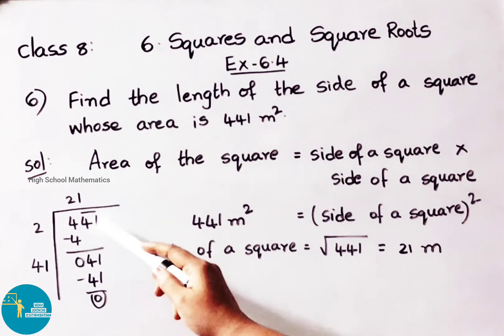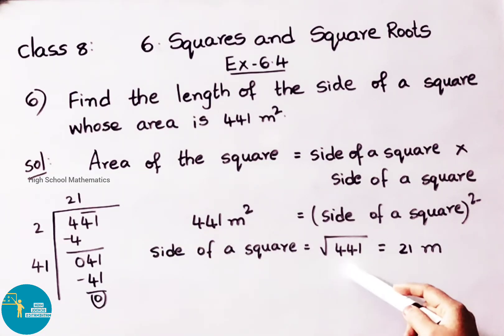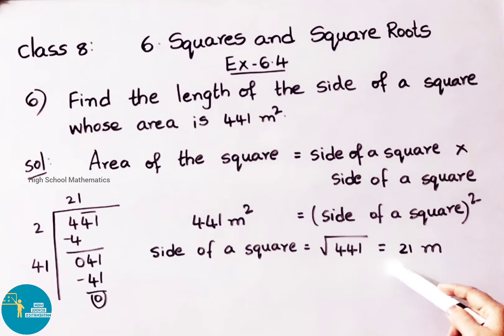Therefore the square root of 441 is 21. Therefore the side of the square equals to square root of 441, that equals to 21 meters.